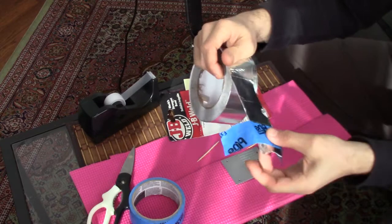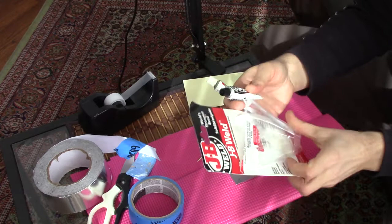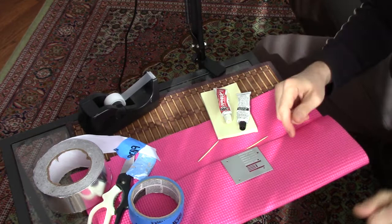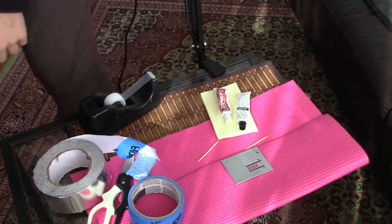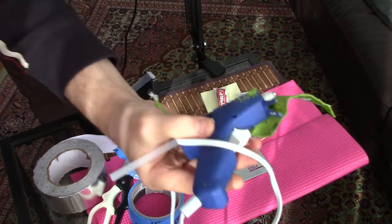What we're using is this JB Weld stuff, any sort of solid glue. You could probably even use hot glue. Where it's a hot gun glue. So you could probably use that too, without any problem.